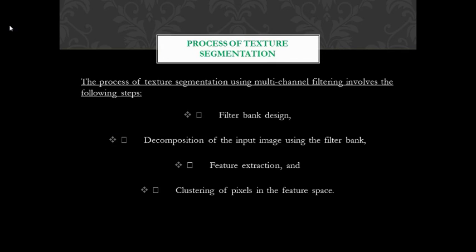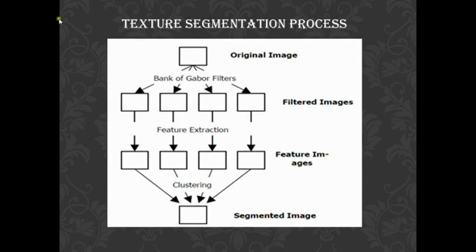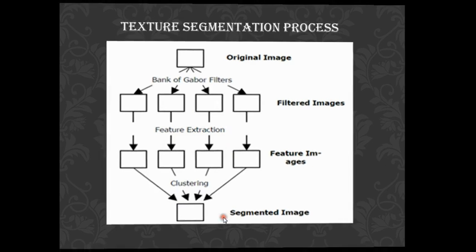The first step is designing a filter bank, and the output of the filter bank is then processed or decomposed in the next step. The third step involves extraction of all the features, and the final step involves clustering of all the pixels in the feature space. This entire process of feature segmentation can be diagrammatically shown in this diagram. Here we have the original image, which is then passed through a filter bank. We use Gabor filters in this particular process. A bank of Gabor filters processes this image, and the filtered images are then passed through a second step of feature extraction. All the features of these individual images are extracted and these feature images are then clustered to get the final segmented image.